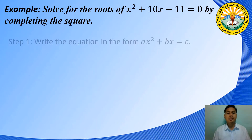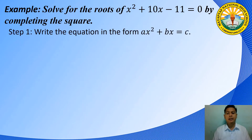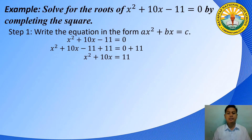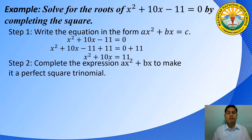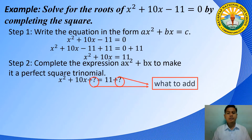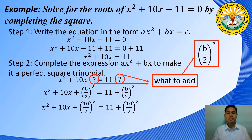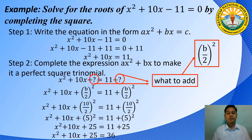First, write the equation in the form x squared plus bx is equal to c. The equation x squared plus 10x minus 11 equals 0, by the addition property of equality, becomes x squared plus 10x is equal to 11. Second, complete the expression to make it a perfect square. To get the constant to be added, use the formula b over 2 squared. Here, b is 10, so we get x squared plus 10x plus 25 is equal to 36, where the left side is a perfect square trinomial.